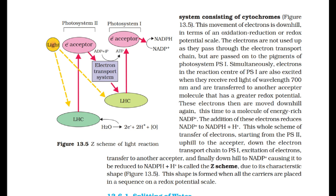Simultaneously, electrons in the reaction center of PS1 are also excited when they receive red light of 700 nm and are transferred to another acceptor molecule with a greater redox potential. These electrons then move downhill to a molecule of NADP+. The addition of these electrons reduces NADP+ to NADPH + H+. This whole scheme is called the Z scheme due to its characteristic shape when all carriers are placed in sequence on a redox potential scale.